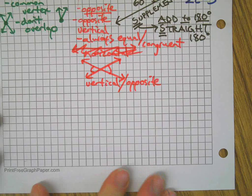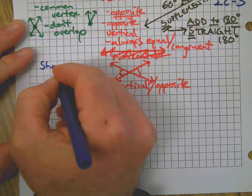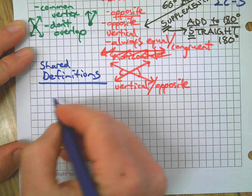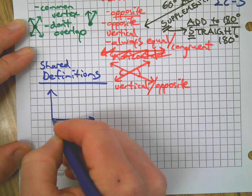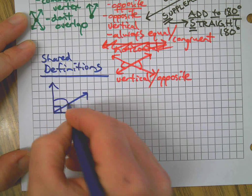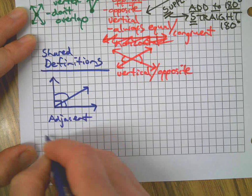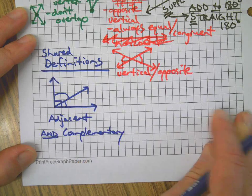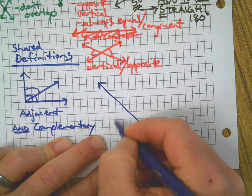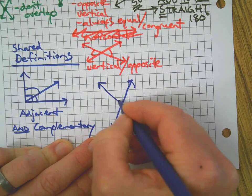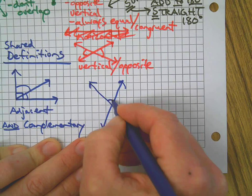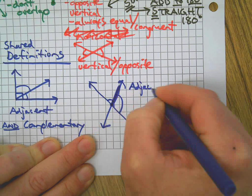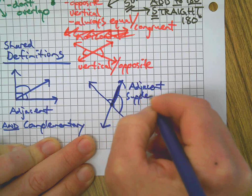Before we finish, let's talk briefly about shared definitions. Be open to a pair of angles having more than one definition. For example, these two angles here are adjacent — they have a common vertex and a common side — and they are also complementary because they form a 90-degree angle.